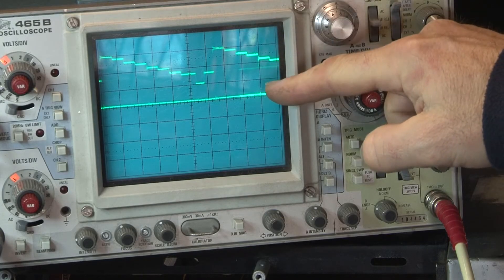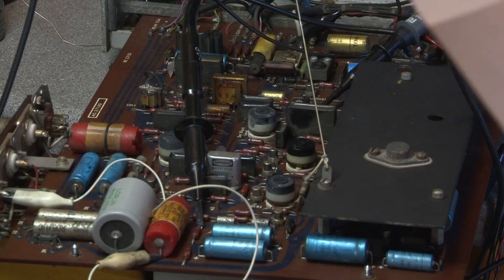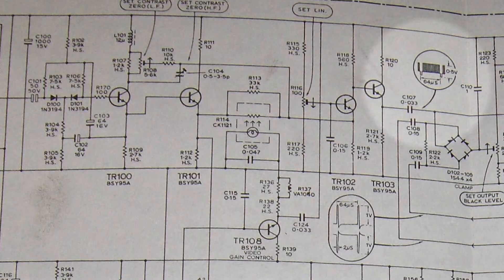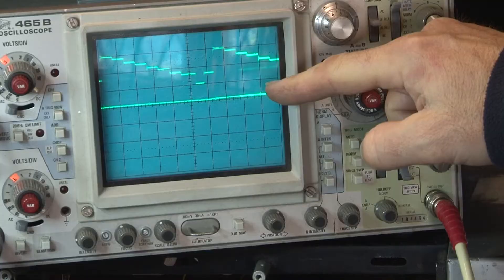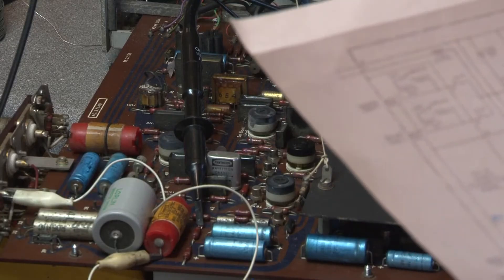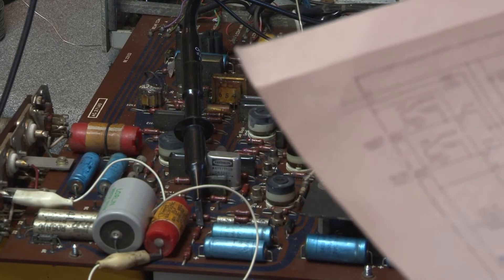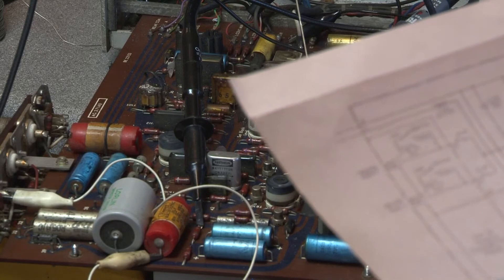The other channel of the scope is monitoring just beyond C107 and we actually have the benefit of a drawing showing what we should expect to see at that test point but as you can see from the scope we've got absolutely nothing there. So it's a fair assumption to say that the fault lies somewhere in the first four transistors, somewhere there.